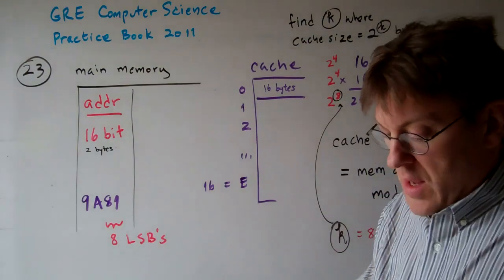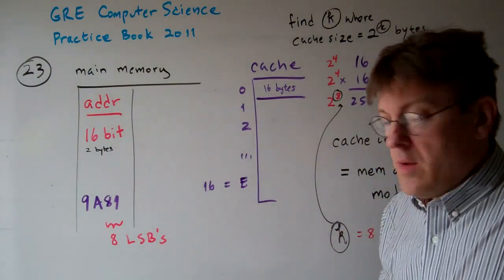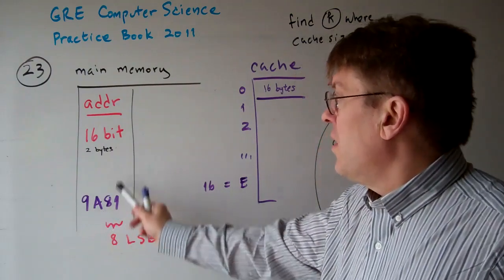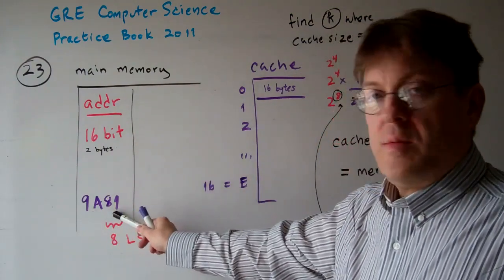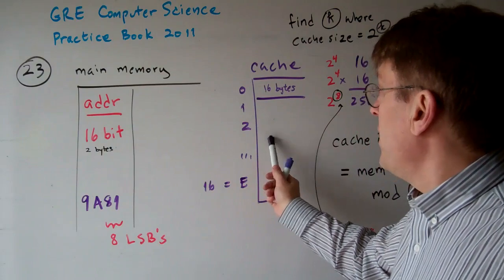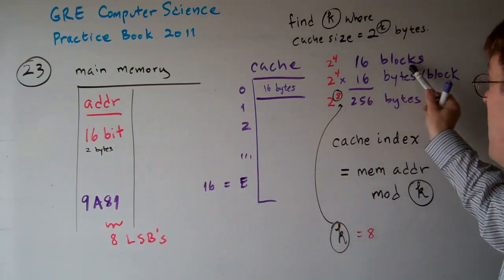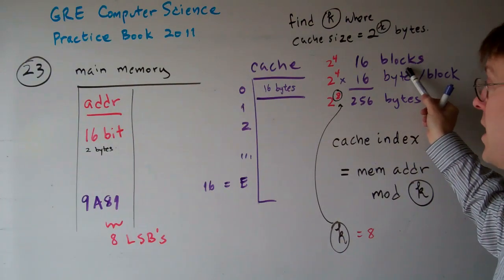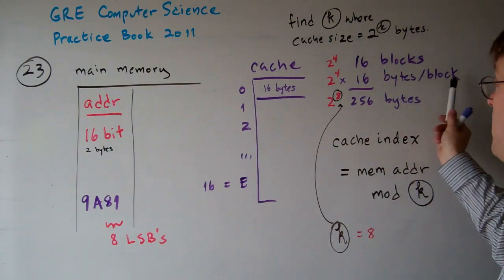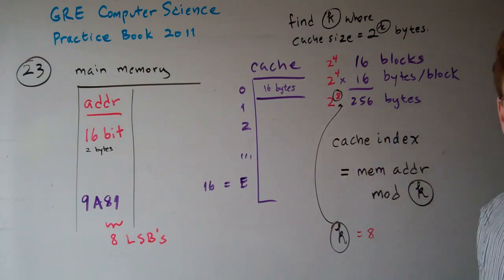Okay, so now the question is, how does this address in main memory 9A81, base 16, map into this cache? Okay, now we have 16 blocks of data in the cache, 16 blocks, with 16 bytes per block. That's 256 bytes.